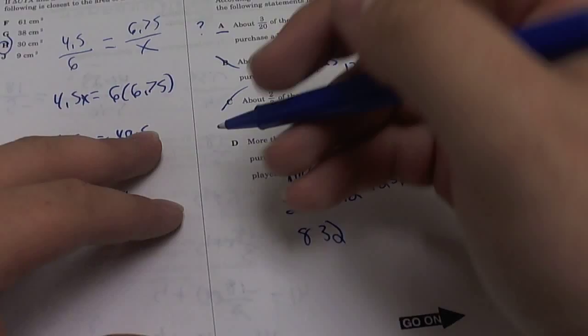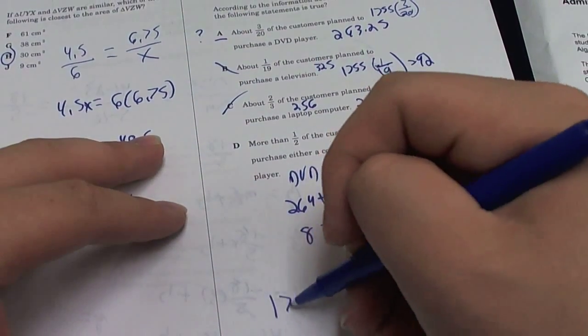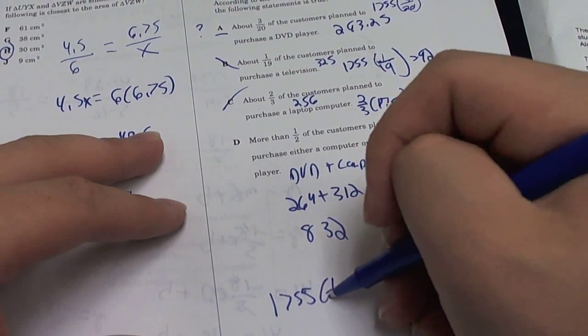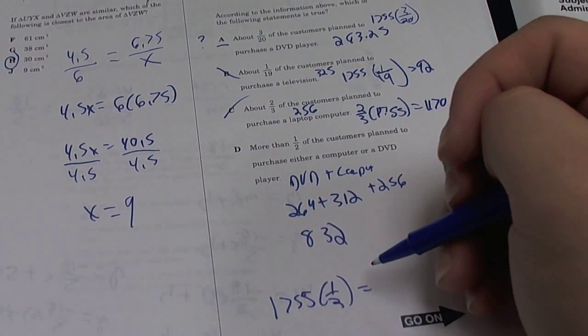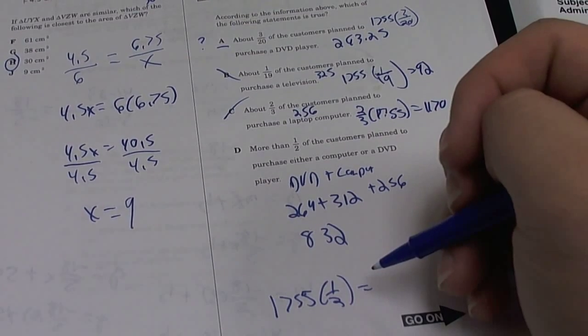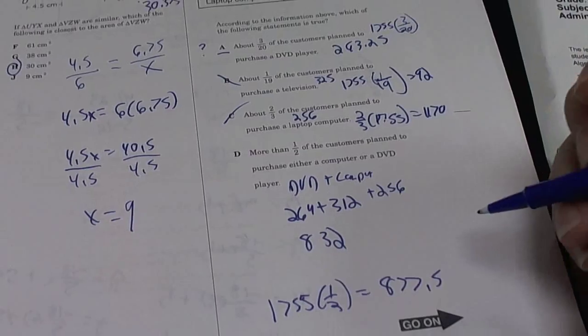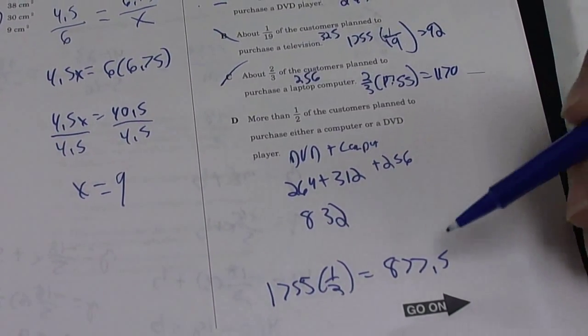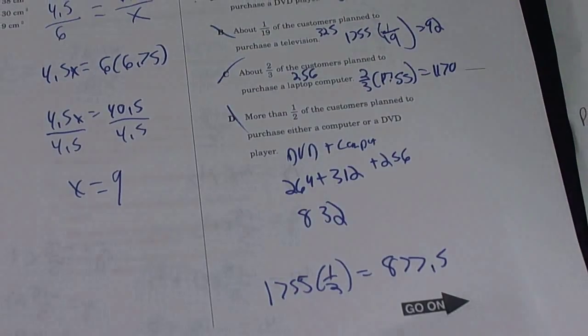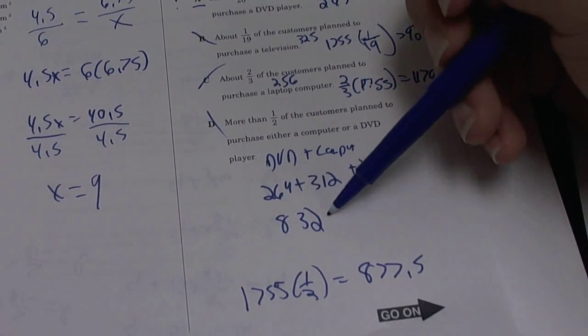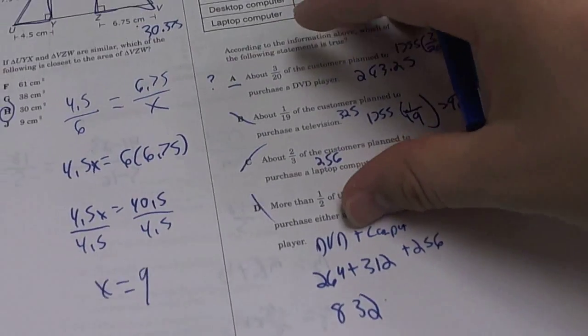Now I've got to find out if that's half of 1755. So you find half of that, which is 877.5. Is 832 more than half? No, it's definitely not more than half. It's way less than this. So the answer is A.